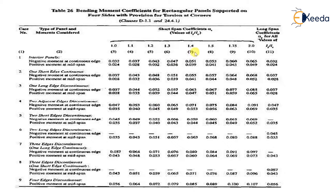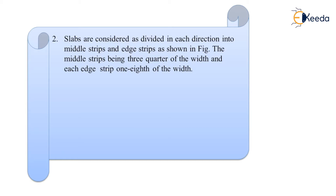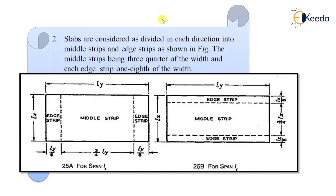The slabs are divided in each direction into a middle strip and edge strips, as shown in the figure. The middle strip is three-quarters of the width, and each edge strip is one-eighth of the width. So the middle strip for span LX is (3/4) × LY, and the middle strip for span LY is (3/4) × LX. The edge strips are LY/8 and LX/8 respectively.